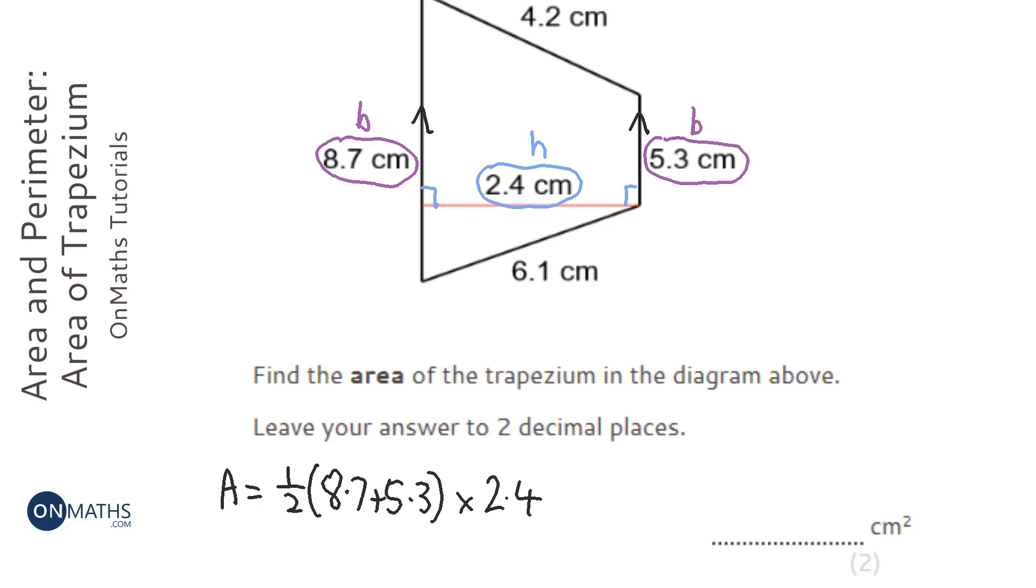And I get the answer of 16.8. Now if it asks to two decimal places I should really put a zero there as well.